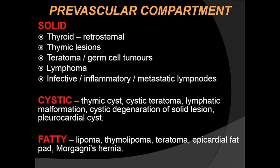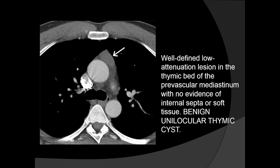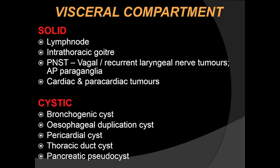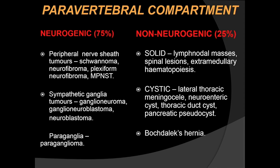Based on this classification, lesions can be divided into solid, cystic, and fatty types by compartment. In the prevascular compartment, a large lobular heterogeneous lesion with macroscopic fat, soft tissue, and fluid density turned out to be a mature teratoma. A well-defined low-attenuation unilocular lesion in the thymic bed with no internal septa turned out to be a benign thymic cyst. In the visceral compartment, a well-circumscribed homogeneous subcarinal lesion indenting the left atrium was a bronchogenic cyst.